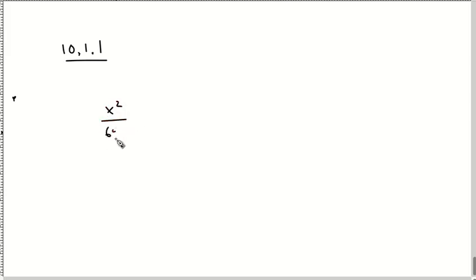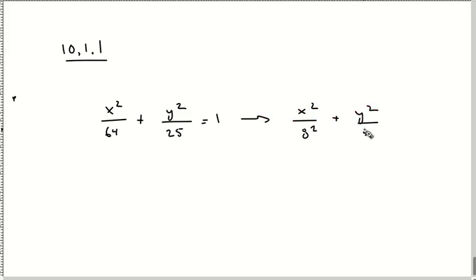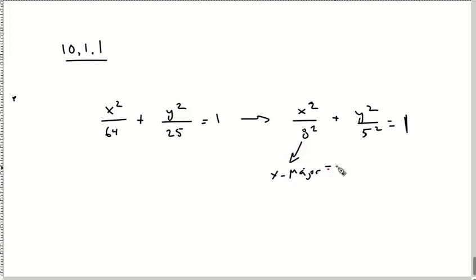So, problem 10.1.1: I've got x squared over 64 plus y squared over 25 is equal to one. I'm going to rewrite this as x squared over eight squared plus y squared over five squared. This is the bigger one, so I've got an X major of eight, and this is the smaller one, so I have a Y minor at five.